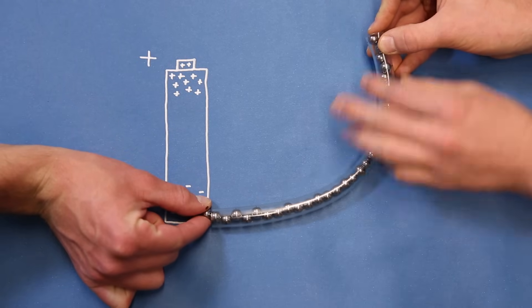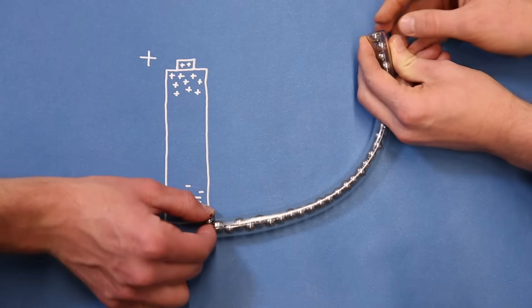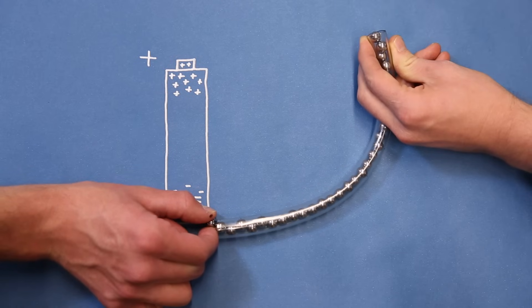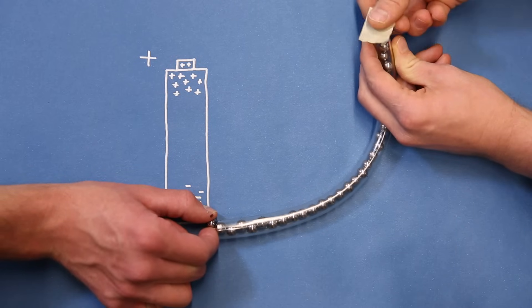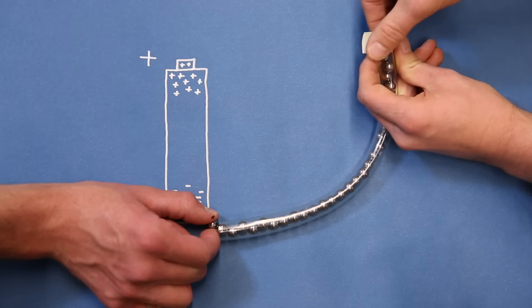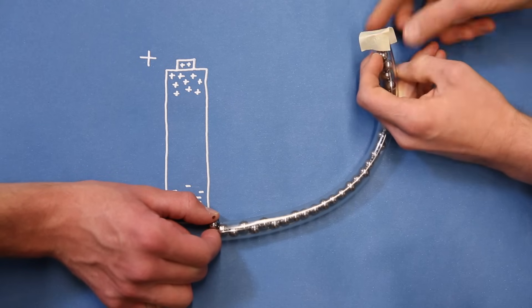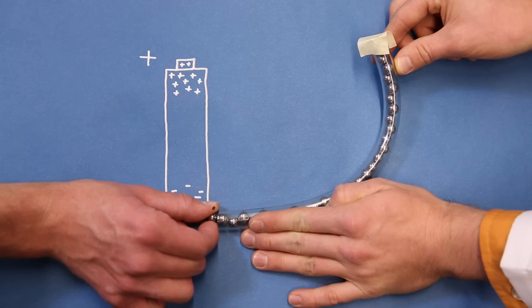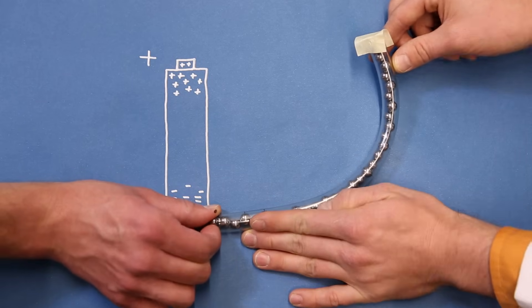However, air is an insulator, as its molecules do not have very mobile electrons, and it won't readily accept the free electrons. To show this, we'll put a piece of tape at the end of the tube. Now, the electrons at the end of the wire have nowhere to go. Even if we push against the electrons in the wire, they still won't budge.